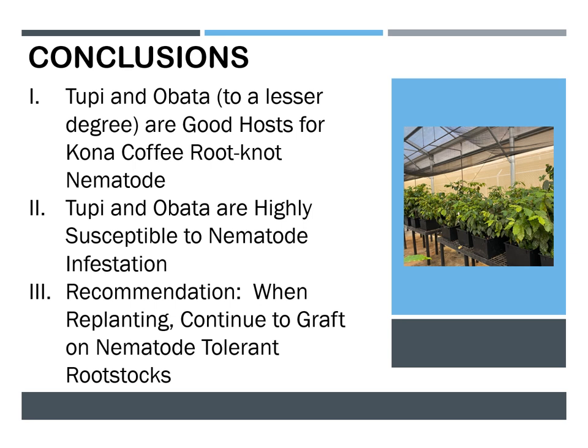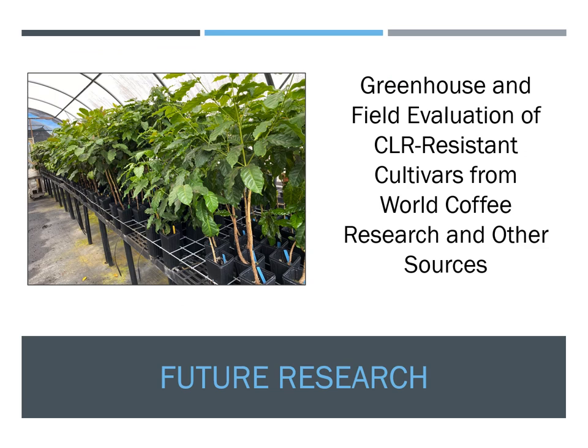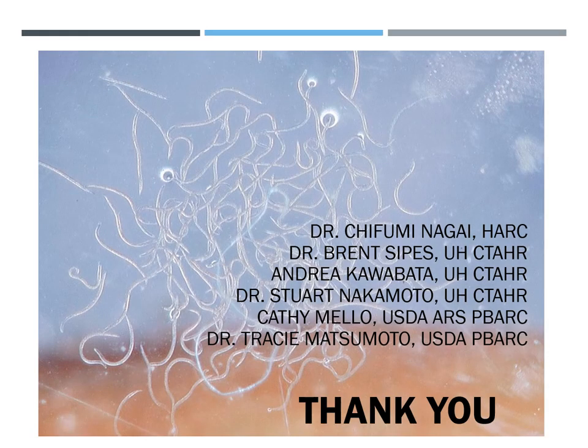In conclusion, Tupi and Obata were good hosts for the Kona coffee root knot nematode with high levels of nematode reproduction. They were both also considered highly susceptible to nematode infestation, suffering severe damage to the root systems. Our recommendation is when replanting to continue grafting these cultivars on nematode tolerant rootstocks such as Liberica. This project will be ongoing with further greenhouse and field evaluation of CLR resistant cultivars from World Coffee Research and other sources. I would like to say a big thank you to all of my collaborators and colleagues who assisted with this research, and thank you very much for your attention.